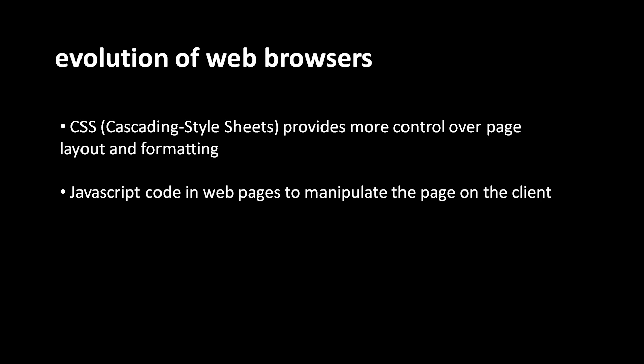The second big feature added in the late 90s is JavaScript. Browsers now include a JavaScript interpreter, such that you can put JavaScript code in your HTML, and the browser will execute that JavaScript code. There's a JavaScript API within the browser that allows the JavaScript code to manipulate elements of the page.